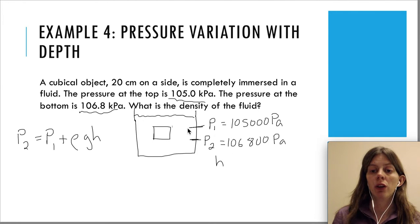And then we need our h. H is always the height in between the two pressures that we know in this equation. So the height is going to be 0.2 meters, where I have converted 20 centimeters to meters because there are 100 centimeters in a meter.